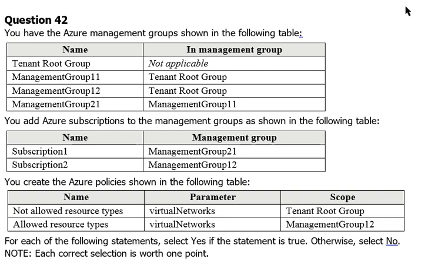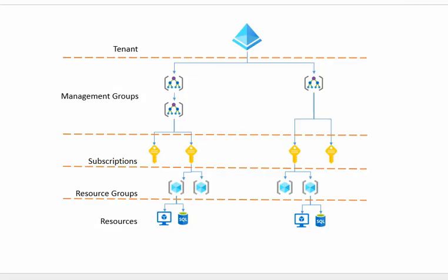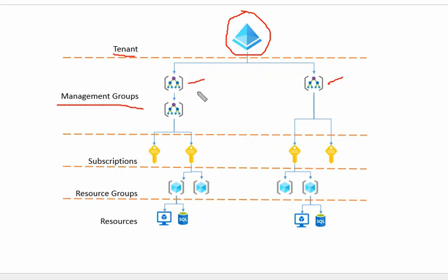Let's discuss the concept first using this diagram. At the top level we have the root tenant account. Under that root tenant account we have management groups. Management groups are containers that help manage access, policy, and compliance.